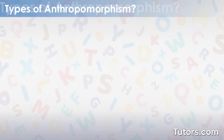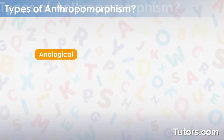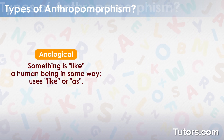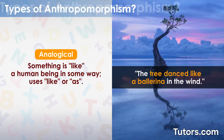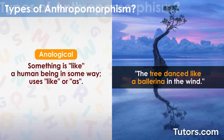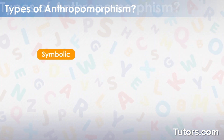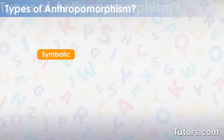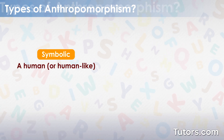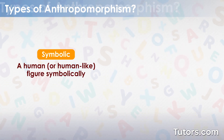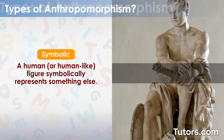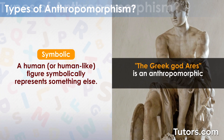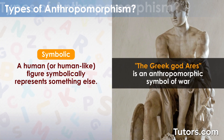An anthropomorphic analogy identifies that something is like a human being in some way, such as the tree danced like a ballerina. Symbolic anthropomorphism is when a human or human-like figure symbolically represents something else. For example, the Greek god Ares is an anthropomorphic symbol of war.